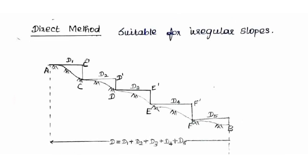Breaking of chain or tape: we measure A to B in segments, for example A to C. Using a 30-link portion of a 30m chain, we fix an arrow at C. The follower moves to the leader's position, and the follower holds the zero end of the chain. We fix the arrow and move the chain forward to complete a full chain length. If the slope is too steep, we use shorter steps to avoid breaking of chain.